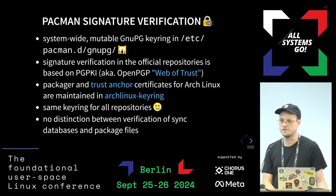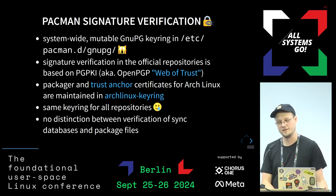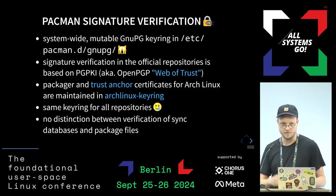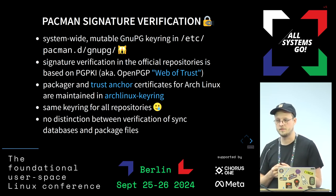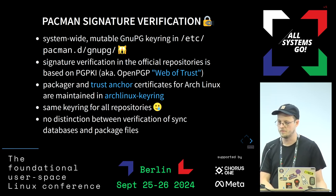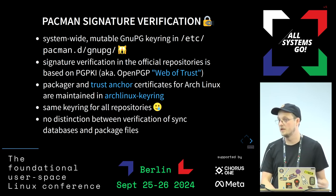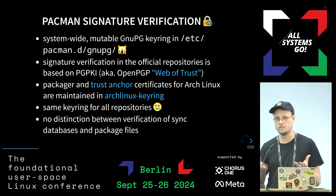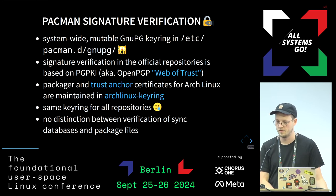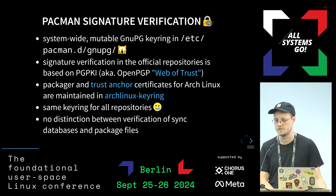There's lots of ugly stuff here. We have a system-wide mutable GnuPG keyring that resides in /etc, which is not very pretty - it's super brittle unfortunately. The entire signature verification scheme is based on PGP web of trust. The packager certificates and trust anchors are all maintained in custom tooling. The largest downside is that pacman doesn't really distinguish between using that keyring to verify any of these repositories - it uses the same keyring for all repositories - and it also doesn't offer distinction between verification of the repository metadata and the package files.